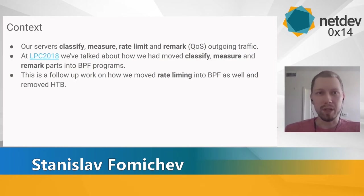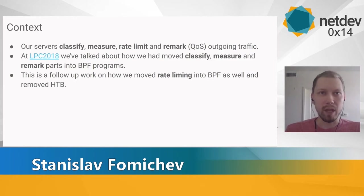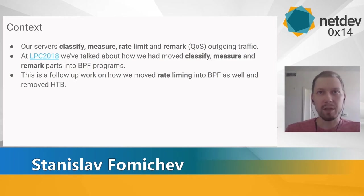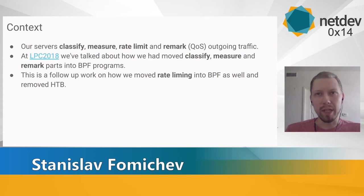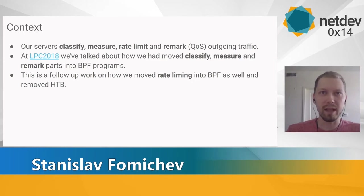Next is measurement: we count the packet and byte rate for each aggregate. Then rate limiting: if the aggregate rate limit is higher than some pre-configured number, we throttle the packets. And lastly, sometimes we also rewrite some parts of the packet to change the quality of service. About two years ago at Linux Plumbers Conference, we shared how we moved classification, measurement, and remarking from HTB to BPF. So this talk is a follow-up on how we've moved that last bit — rate limiting — into BPF.